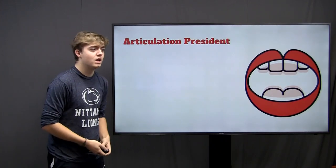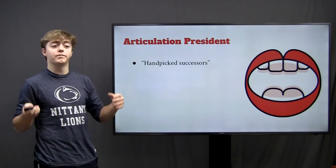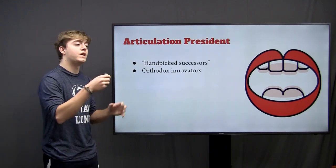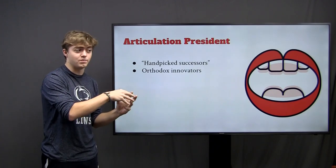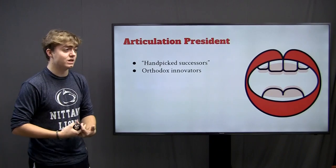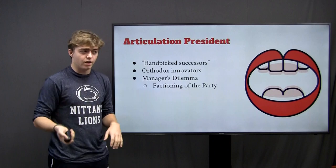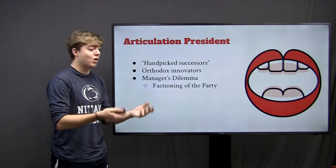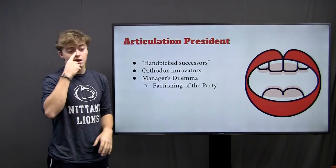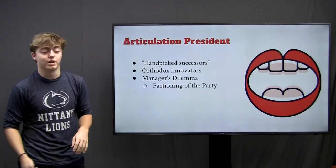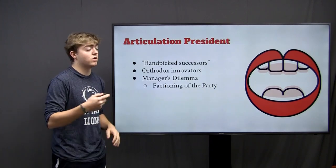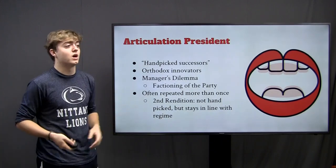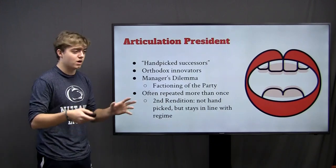Next we have an Articulation president. Oftentimes this is a handpicked successor from the previous Reconstruction president — an orthodox innovator, someone who takes from the cultural identities of the time and then works on those by new ways and means. They often face a thing called the manager's dilemma, meaning they don't always succeed to the level of their predecessors, and the party often fractions into different sections — those supporting the new president and those against. This type of president, along with the next type, is often articulated twice, with its second rendition not being a handpicked successor but continuing the orthodox innovation.